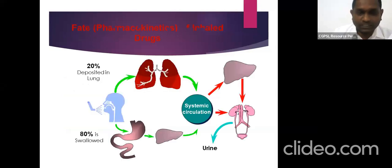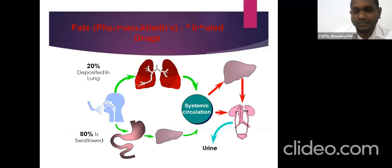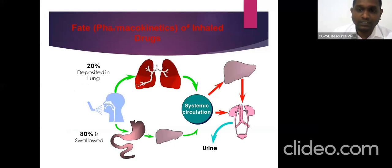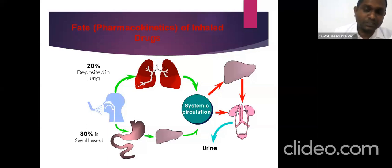One important fact when using inhaler devices is that only 20 to 30 percent of the drug goes to the lung, and 80 percent is deposited elsewhere. Apart from that, there is oropharyngeal deposition, which leads to systemic circulation absorption, but it's a very minor amount because it goes as micrograms and is excreted in the urine.